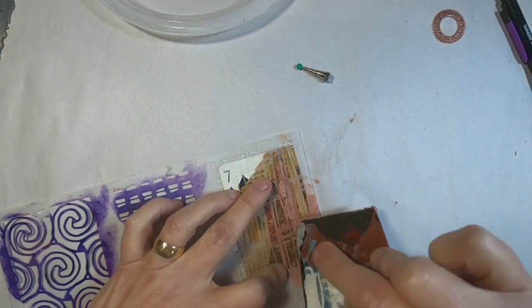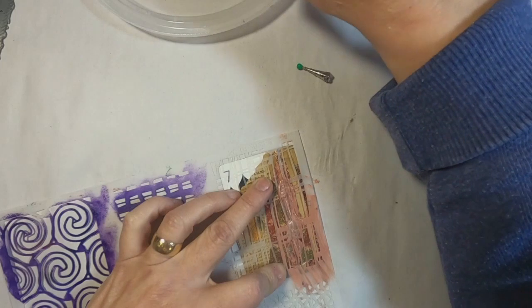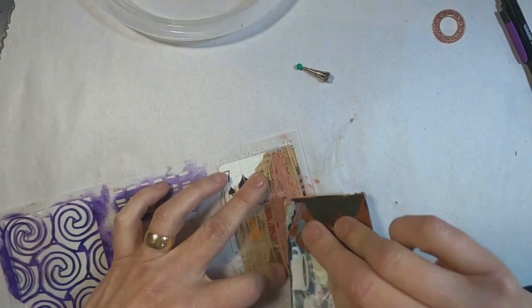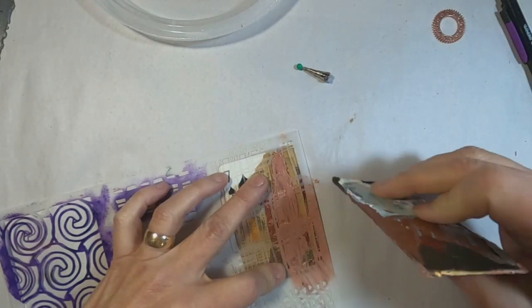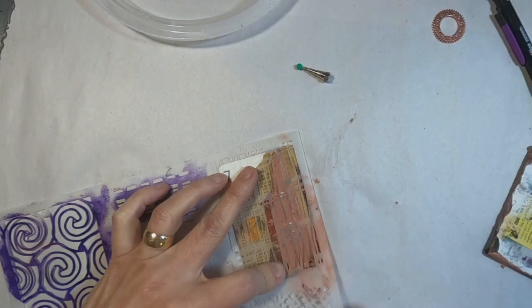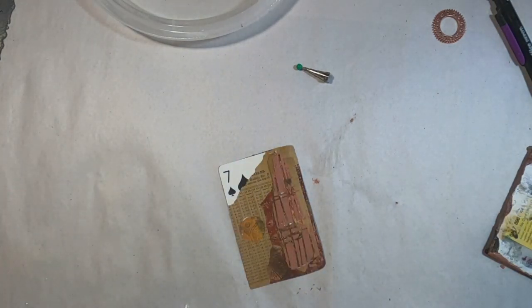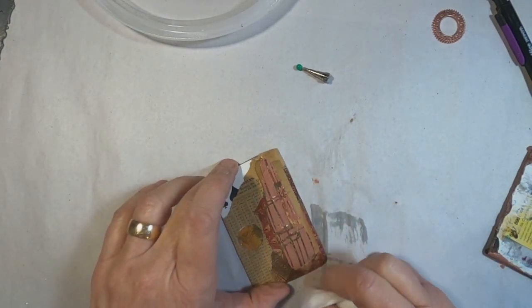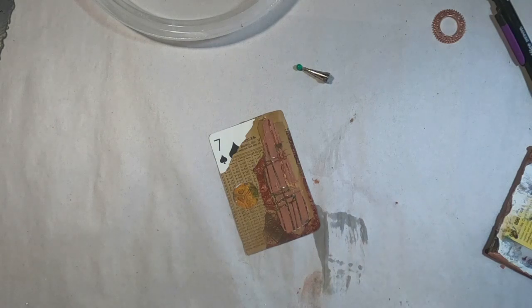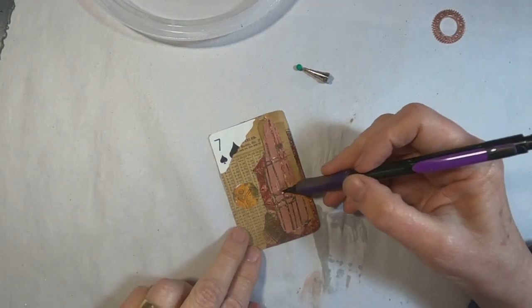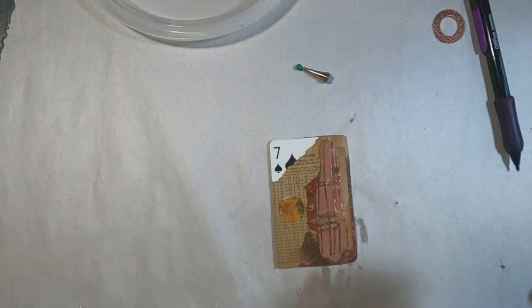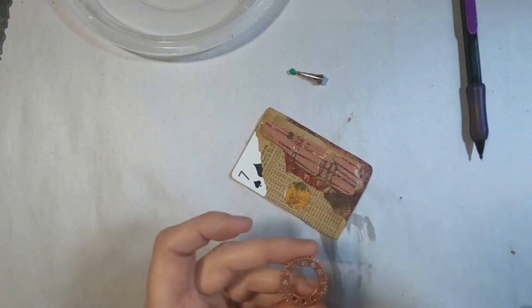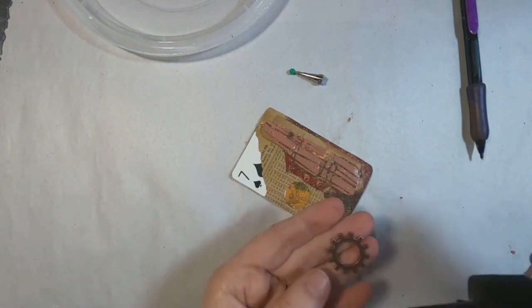So I'm going to go ahead and draw that texture paste through the stencil. And I'm just using an old hotel key card to draw my paste through the stencil and a baby wipe to wipe off any areas that I don't want that paste, that I may have gotten a little aggressive through the stencil. And I shall let that dry and that paste to set up.